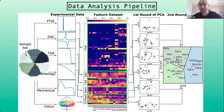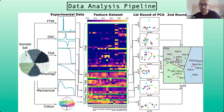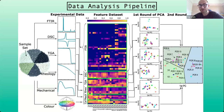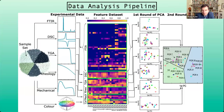One of the challenges has been that we have 23 different resins but for each one we've probably got thousands of data points. So a challenge has been trying to reduce that data and capture the key information, focusing on the meaningful parts. As we go from the experimental data to the feature dataset, for each experiment I'm extracting key features to form a feature dataset - going from probably close to 10,000 data points down to about 56 features.